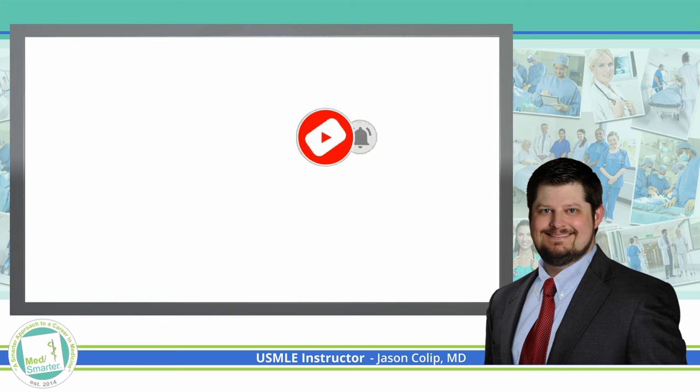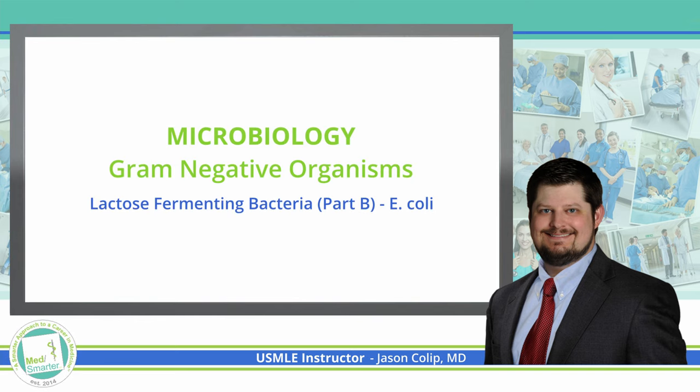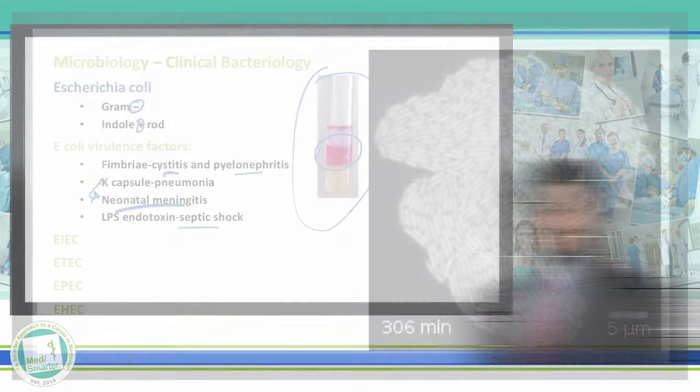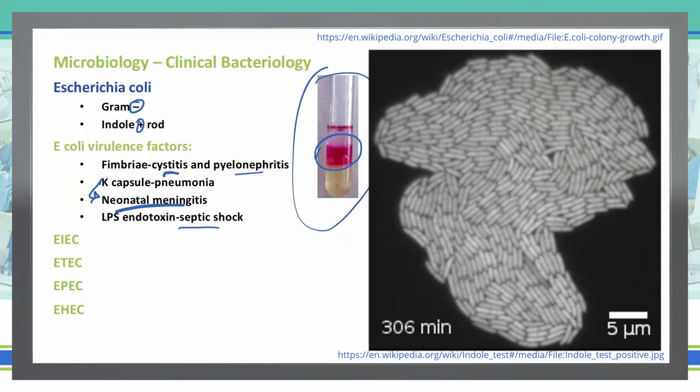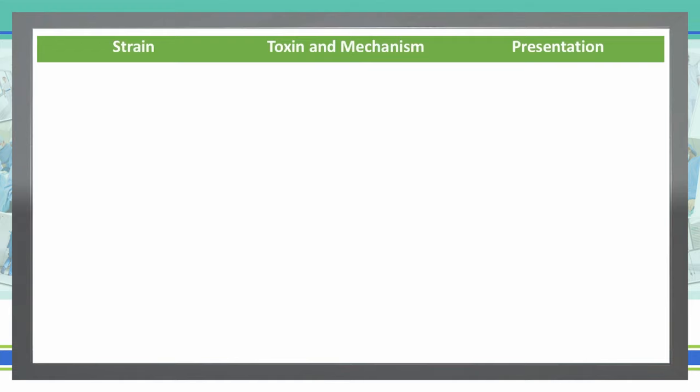We're going to talk about four different types of E. coli: the EIEC, or entero-invasive E. coli; the ETEC, or entero-toxogenic E. coli; the EPEC, or enteropathogenic E. coli; and EHEC, or entero-hemorrhagic E. coli. Let's look at these four different strains of E. coli and see how they present differently based on their toxins.